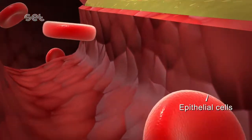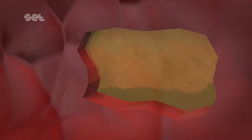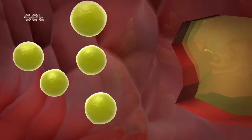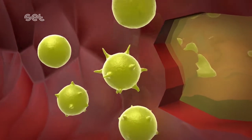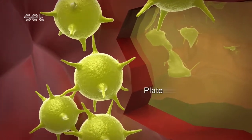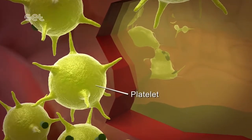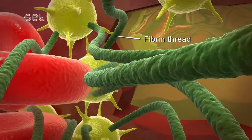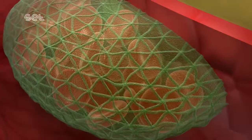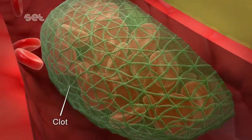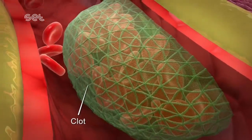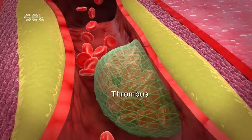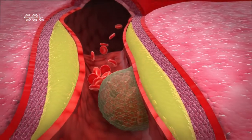With time, epithelial cells may split at a point. This situation activates platelets and enables the formation of fibrin threads. A clot forms as a result. This clot is known as thrombus and prevents the blood flow in the arteries.